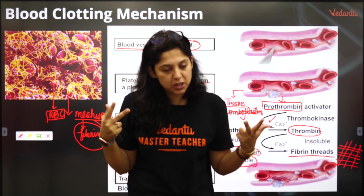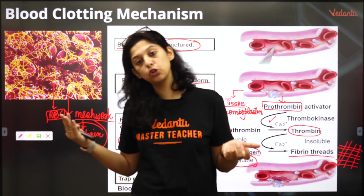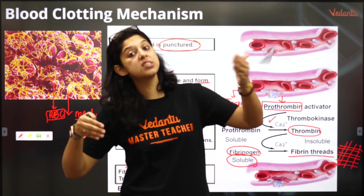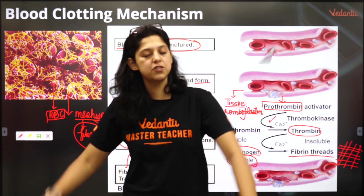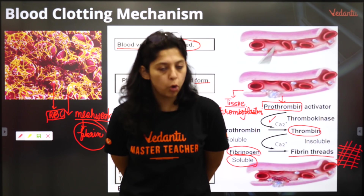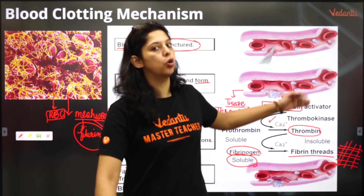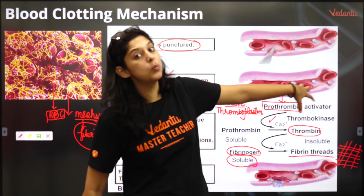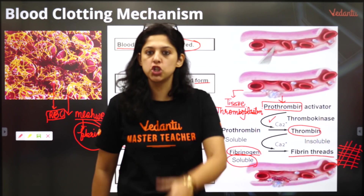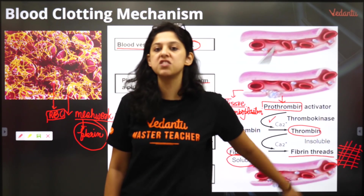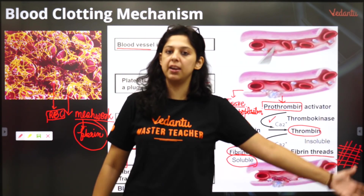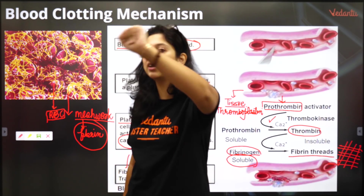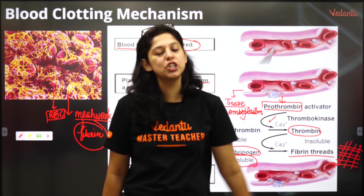There are two pathways for blood clotting. Ek hota hai extrinsic, jo tissues ki taraf se on hota hai. Intrinsic, jo blood ki taraf se on hota hai. Both of them meet at prothrombin to thrombin, which converts fibrinogen to fibrin with the help of calcium.